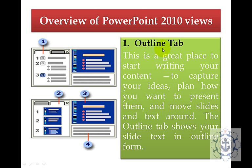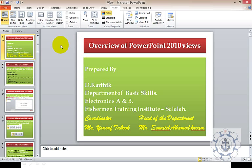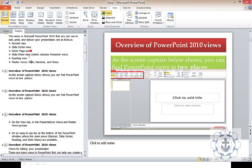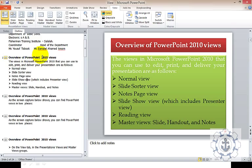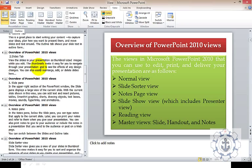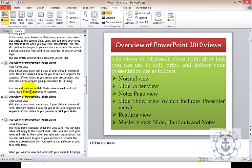The first working area is the outline tab. This is a great place to start writing your content, to capture your ideas, plan how you want to present them, and move slides and text around. The outline tab shows your slide text in outline form. Here you can see two tabs — slide and outline. When you click outline, you can see only the text, making it very easy to edit and plan your presentation.